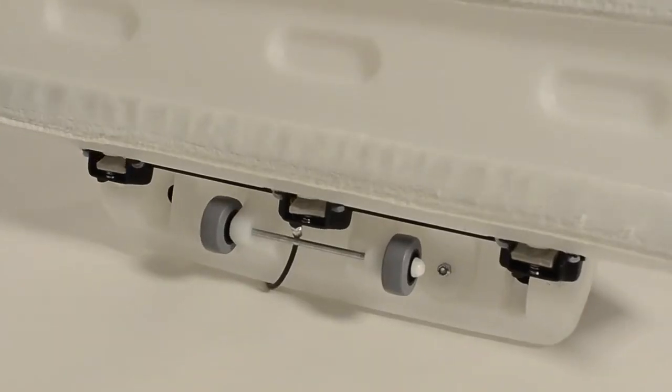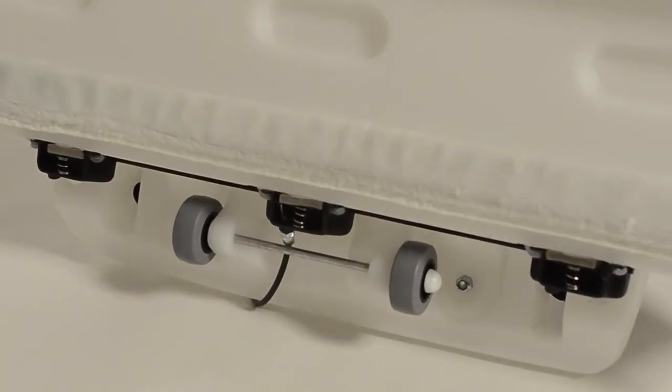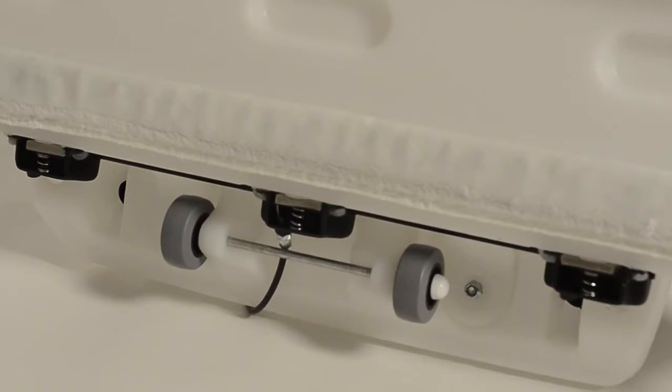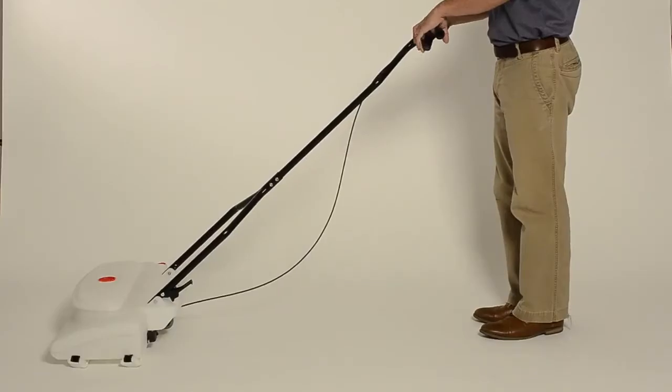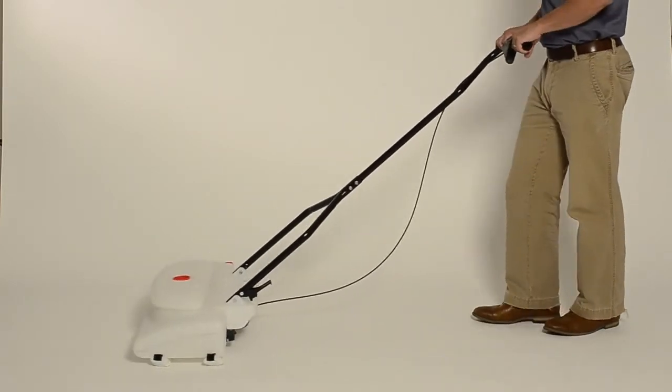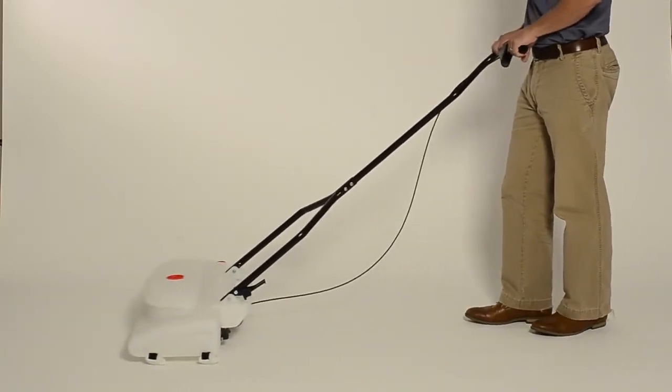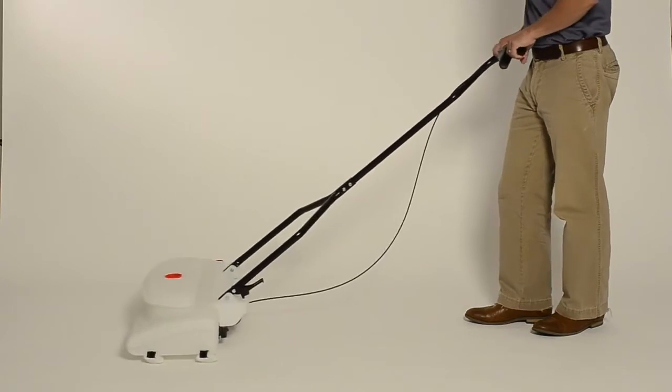To begin, dispense a small amount of finish by fully depressing the actuator lever on the handle. There are three small dispensing pads on back of the base that open as you squeeze the actuator lever. Push and pull the Wax-O-Matic a foot or so to soak the pads with finish.